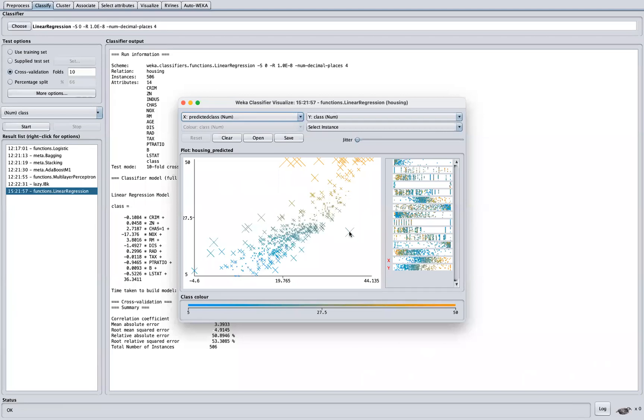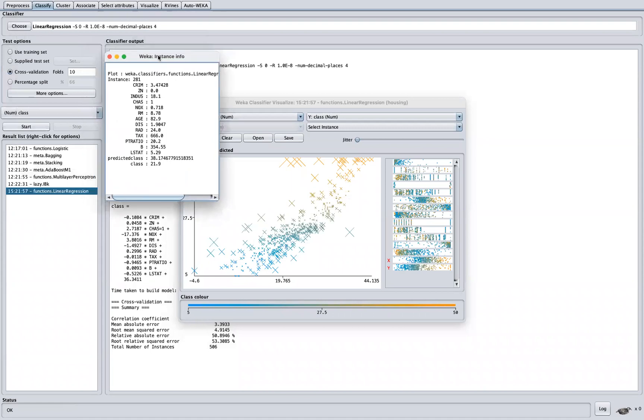So if we click on this data point, we can see here the predicted class was 38 and the actual class was 21. So there's a big difference here.